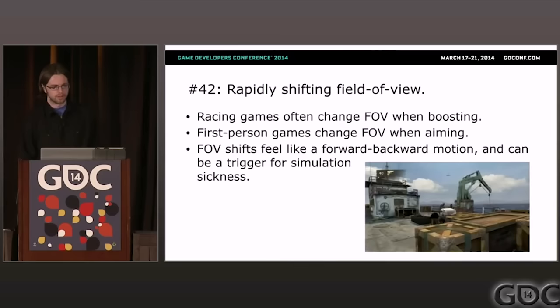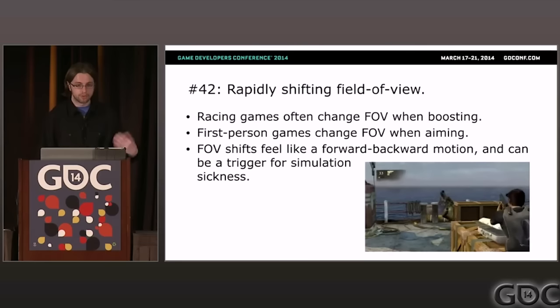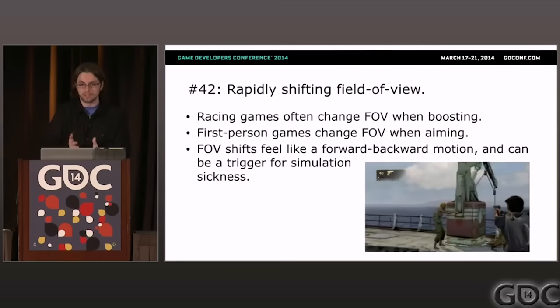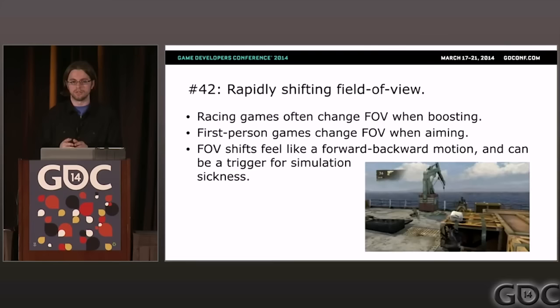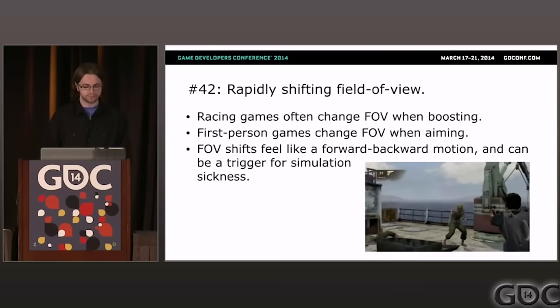Problem forty-two: rapidly shifting field of view. This is increasingly a problem in first-person shooters — when aiming with a sniper rifle, the camera often zooms in rapidly. Racing games do this too when you're boosting, zooming out to make it feel like you're going faster. These rapid field-of-view changes are also triggers for simulation sickness, so be aware.